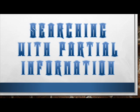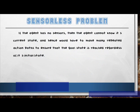Now, onto the last topic: searching with partial information. If the environment is not fully observable, or if the information given is not enough, problems with searching may occur — one of which is the sensorless problem. In a sensorless problem, if an agent has no sensors, it cannot know its current state, and would have to make repeated action paths to ensure the goal state is reached. This may take time as the agent doesn't know where it is located.